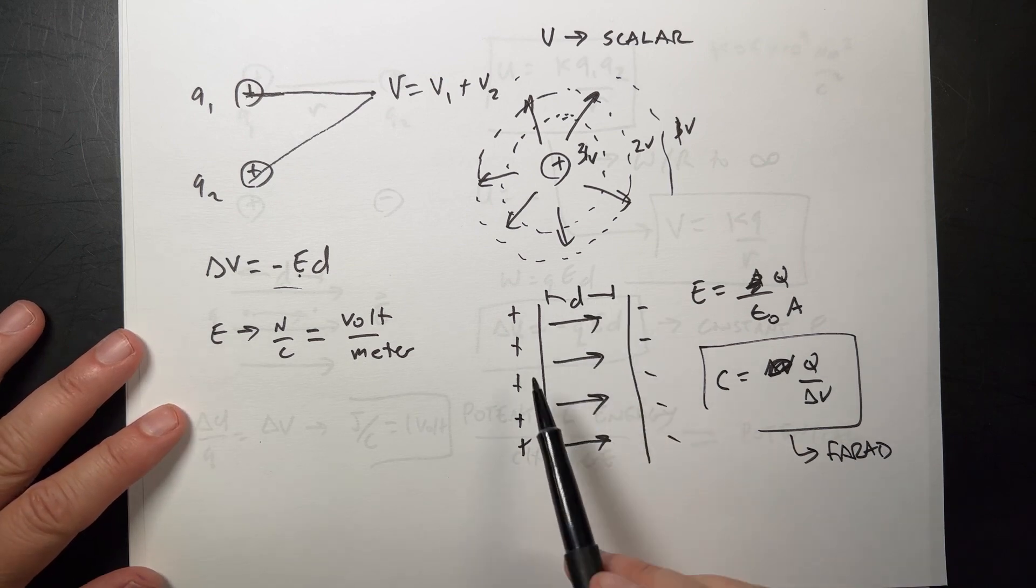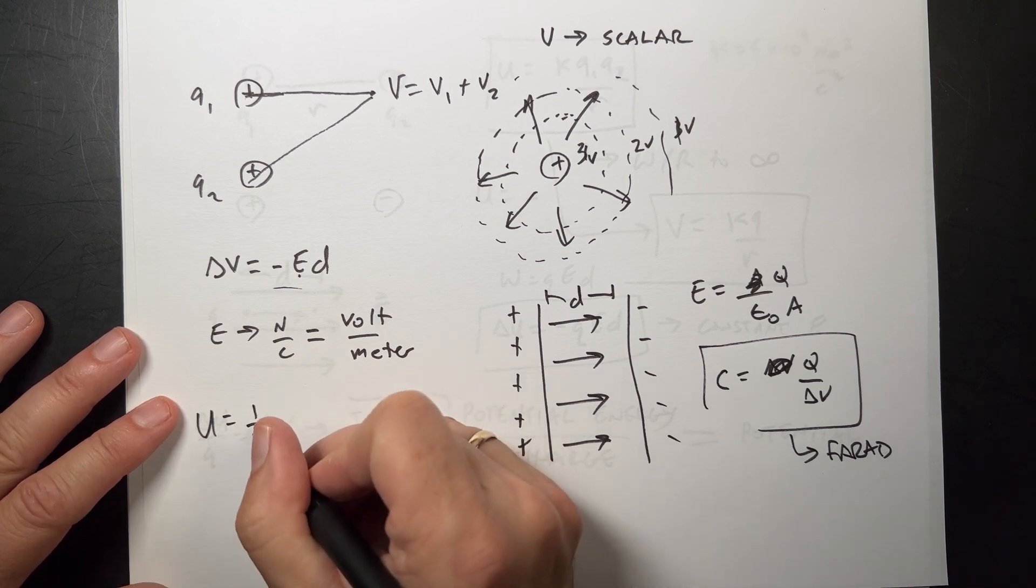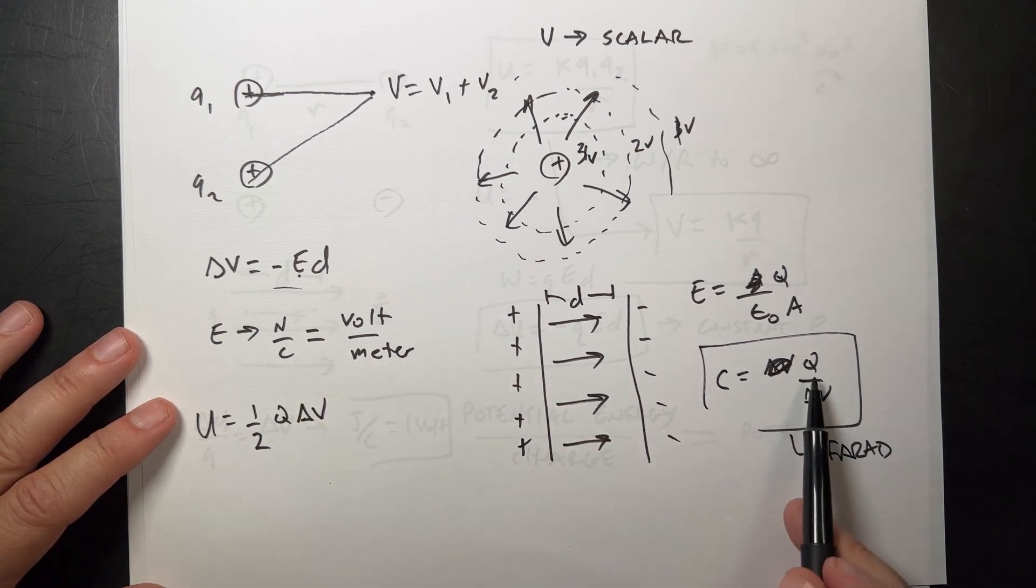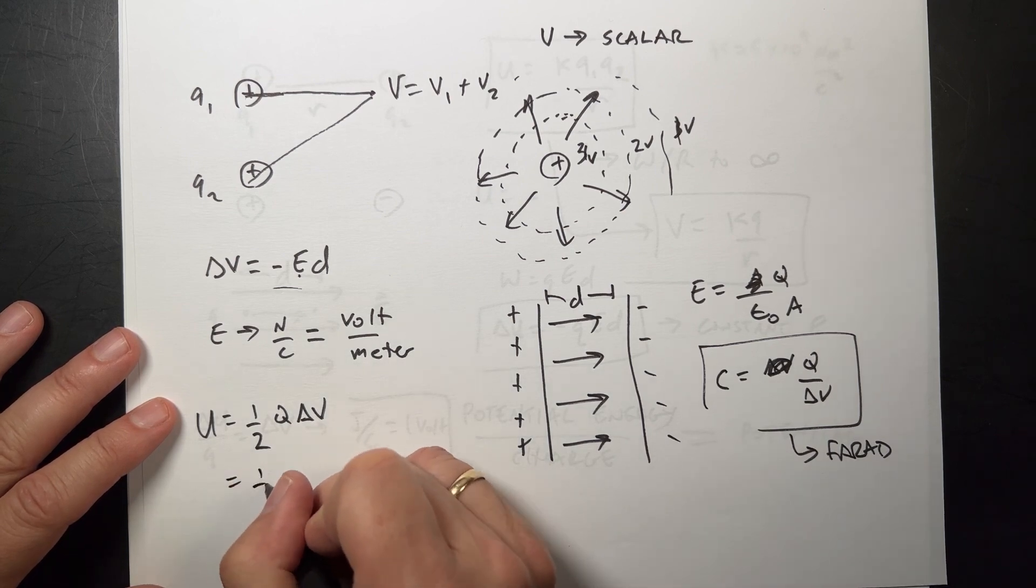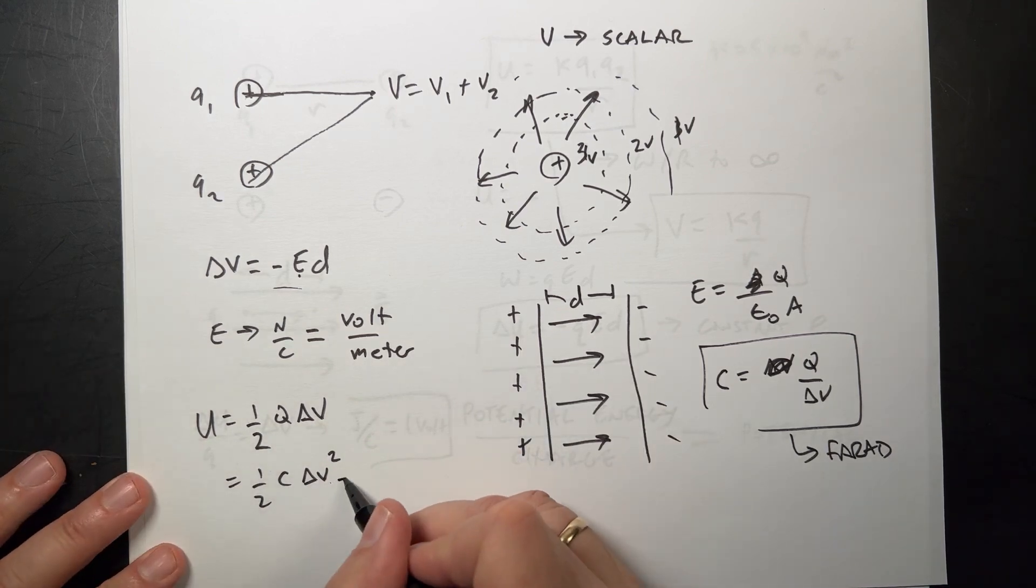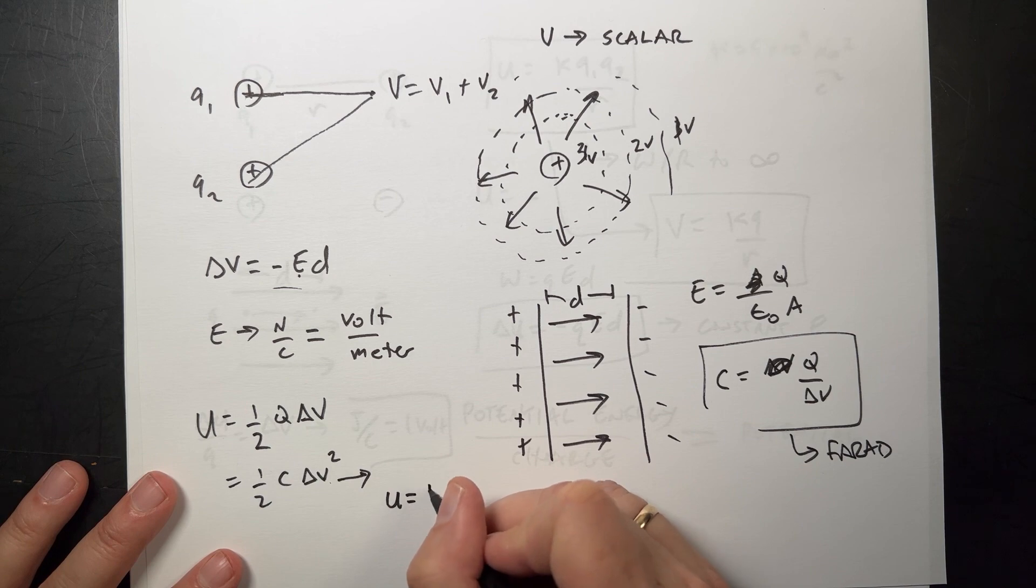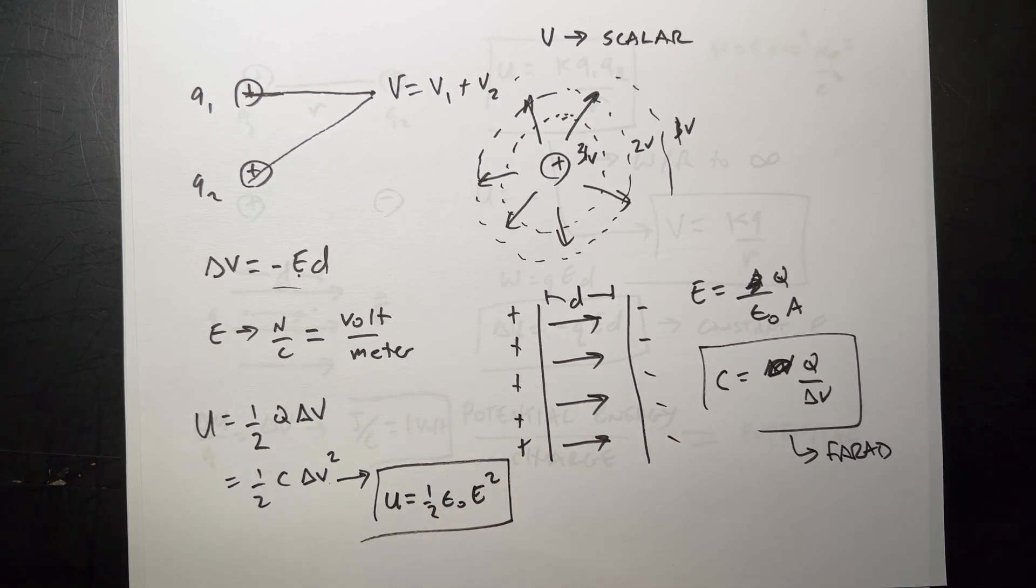One of the important things is that we can actually consider the energy stored in a capacitor, U, as one-half Q delta V. But Q is C times delta V. So we can write this as one-half C delta V squared. But still, it tells us something about the energy in that field. And then if I divide by the volume of that, I get something that actually is kind of cool. It's the energy density, which is one-half epsilon naught E squared. That's the energy density of the electric field. So there's actually energy stored in the electric field.